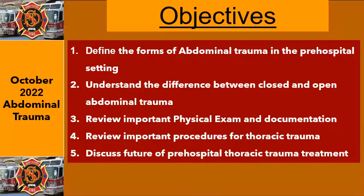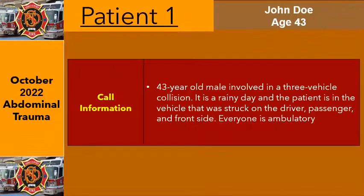Just like before, it looks pretty much similar to what we saw with thoracic trauma. We're going to define the different types of abdominal trauma in the pre-hospital setting, talk about closed versus open abdominal trauma, go through some scenarios to help solidify what we already know. We're going to shake it up a little bit and go directly into a scenario.